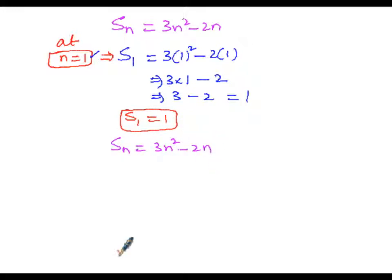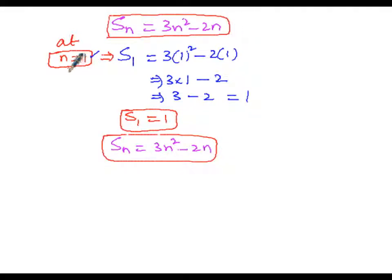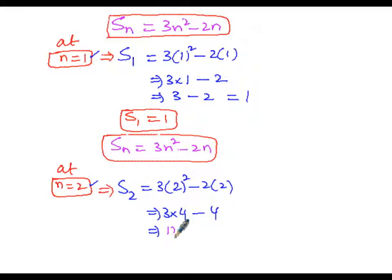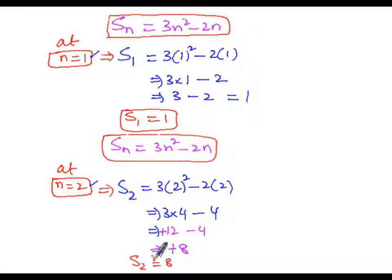At n=2: S(2) = 3 × 2² - 2 × 2 = 3 × 4 - 4 = 12 - 4 = 8. So S(2) equals 8.